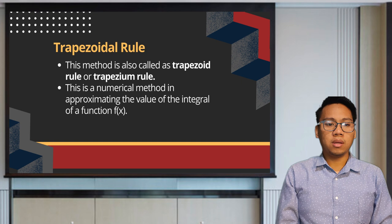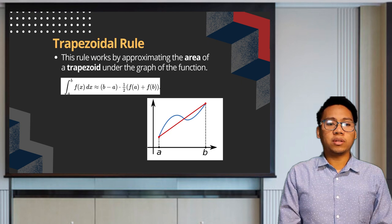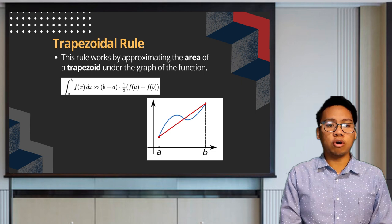This concludes the discussion for the bisection method. For the trapezoidal rule, this method is also called the trapezoid rule or trapezoidal rule. It is a numerical method used in the integration of a function, providing just an approximation of the value of the integral. It is called the trapezoidal rule because the approximation involves the computation of the area of a trapezoid.